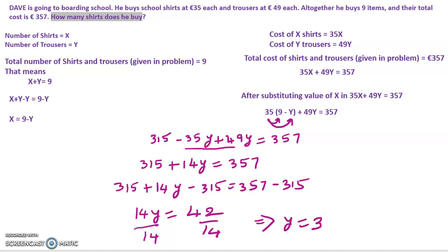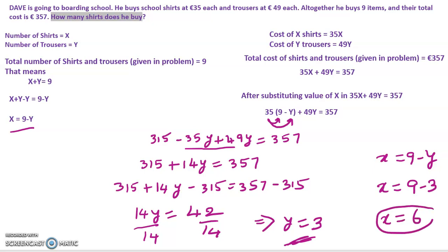Now I substitute the value of y into x equals 9 minus y to find the number of shirts, which is x. That gives x equals 9 minus 3, so x is equal to 6. He bought 6 shirts. The number of shirts we assumed is x, and substituting into the equation gives us x equals 6.